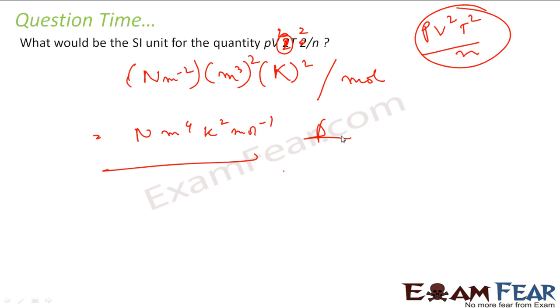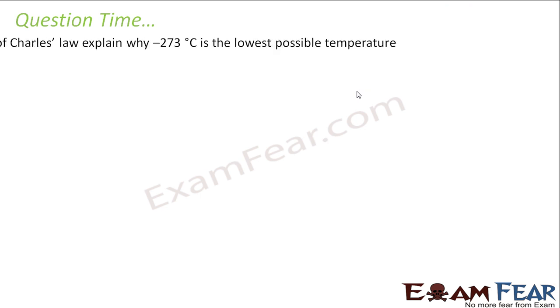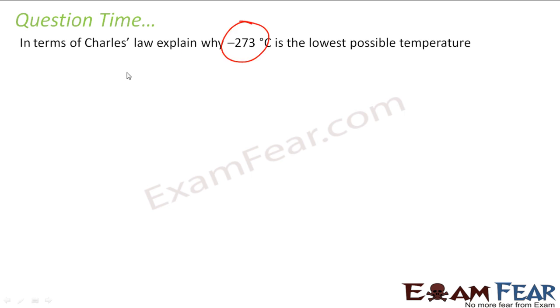In terms of Charles law, explain why minus 273 is the lowest possible temperature. So minus 273 degrees Celsius is nothing but, you know, Charles law deals with Kelvin. So this plus 273 Kelvin, this is zero Kelvin.